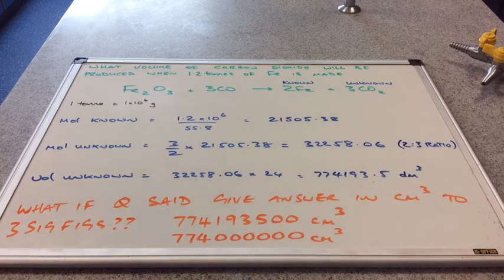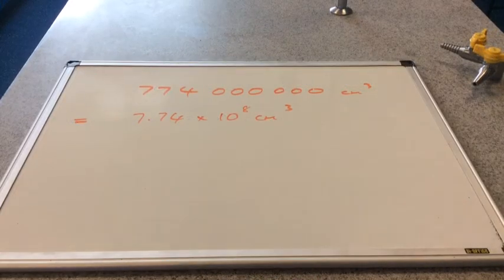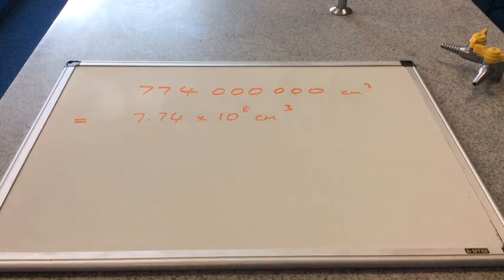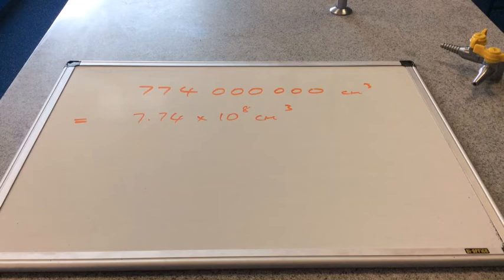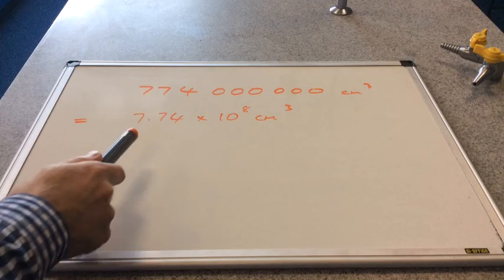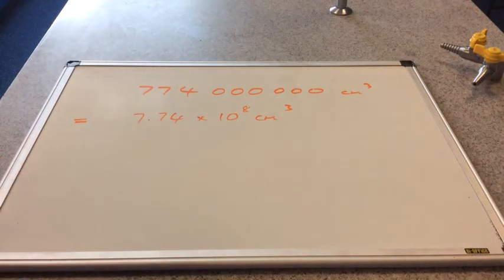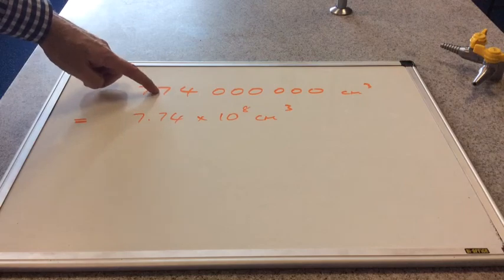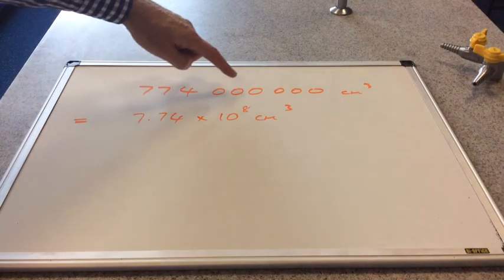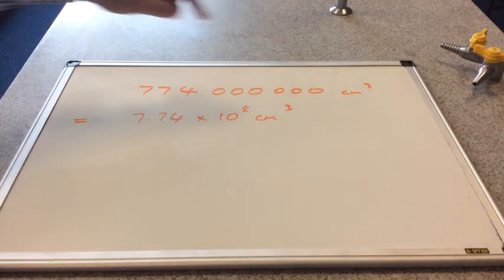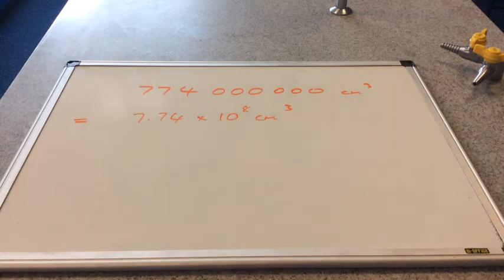And then all those zeros. And obviously with all those zeros there, standard form would be very appropriate. You don't have to, but if you're comfortable with standard form then you may as well put it into standard form. So that would come out at 7.74 times 10 to the power 8. So obviously the decimal point's here. So we've got 1, 2, 3, 4, 5, 6, 7, 8 places after that. So we need 10 to the 8.